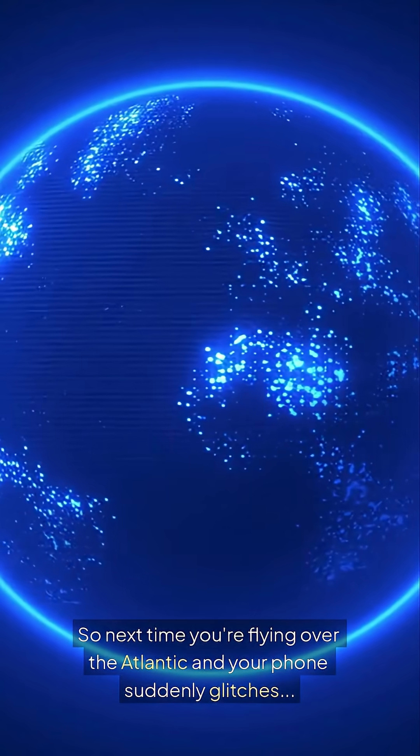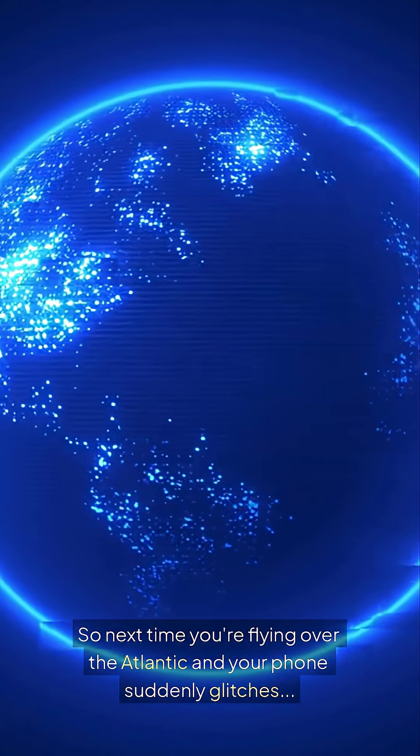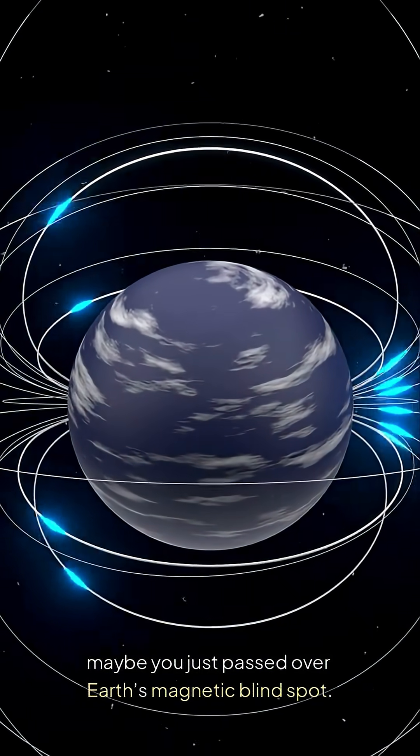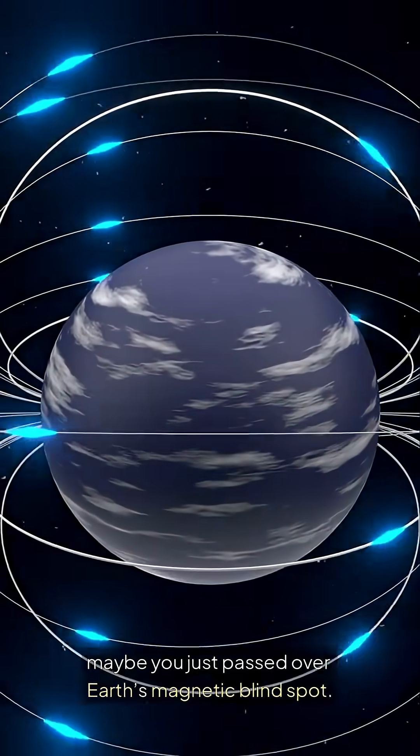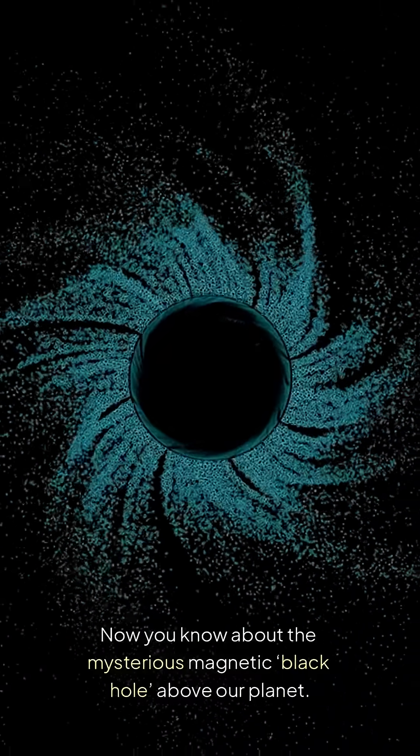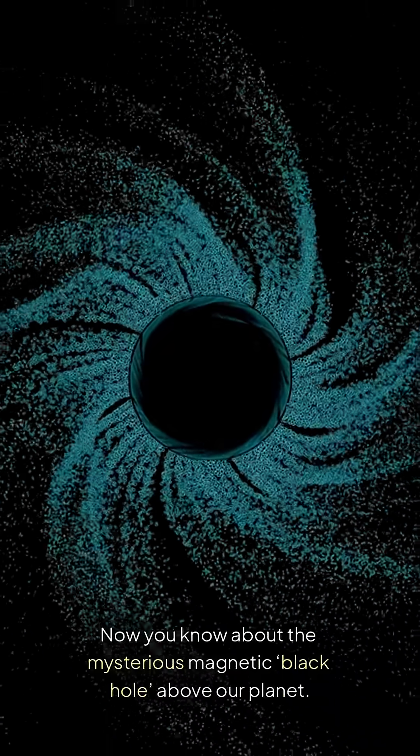So next time you're flying over the Atlantic and your phone suddenly glitches, maybe you just passed over Earth's magnetic blind spot. Now you know about the mysterious magnetic black hole above our planet.